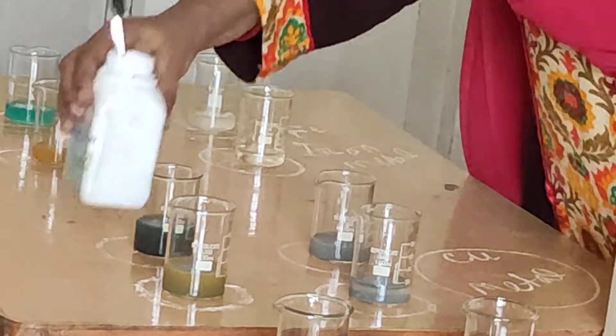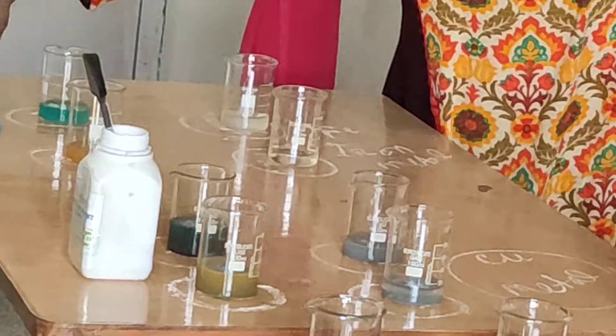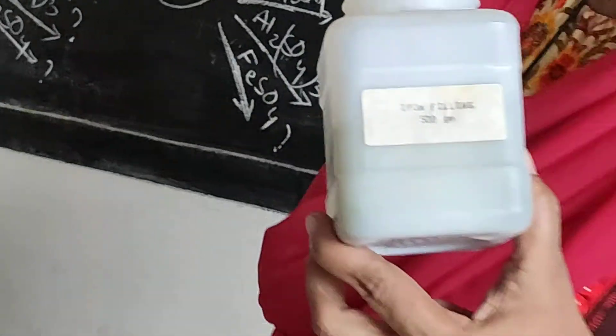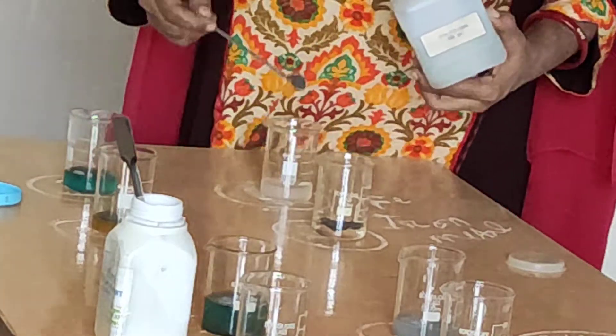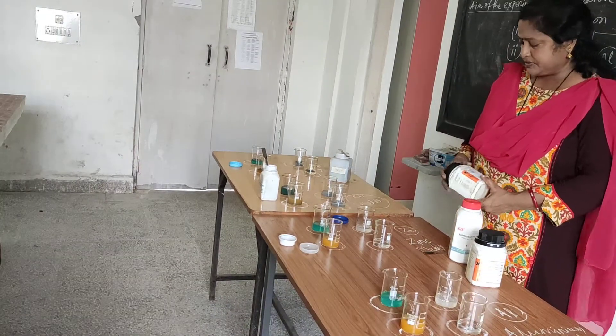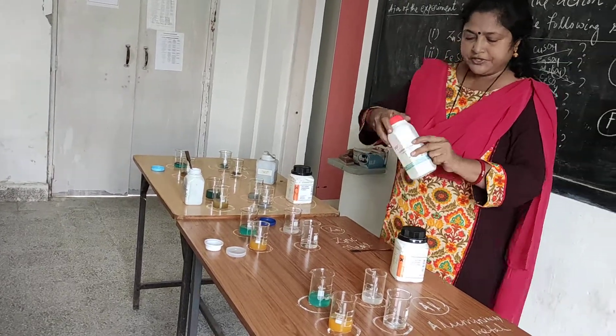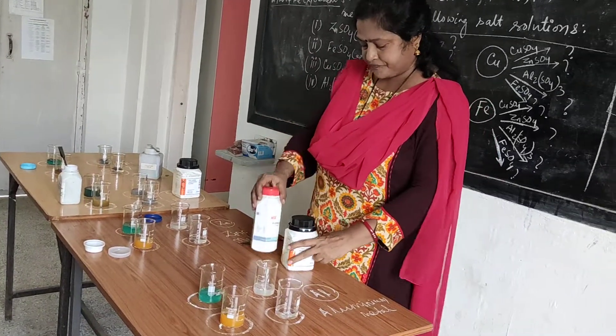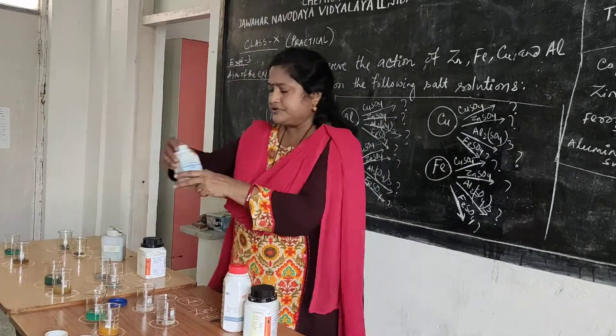The 4th one is your iron filings — this is your iron powder. In the 4th table, I am adding iron to all four beakers. So now you have: iron, zinc, and aluminium — all metals added to their respective tables.